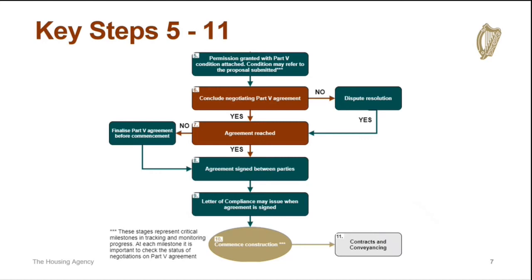At Step 7, agreement is reached, and then signed by both parties at Step 8. The agreement should be finalised before works are commenced on the development. Following the signing of the agreement, a letter of compliance may be issued by the local authority — this is necessary to confirm that the applicant is in compliance with their Part 5 planning condition. Construction then commences, and the final step is contract and conveyancing.